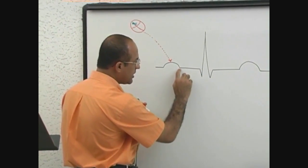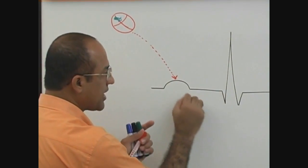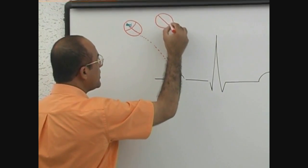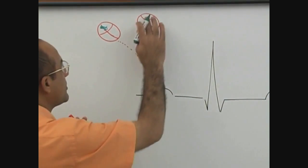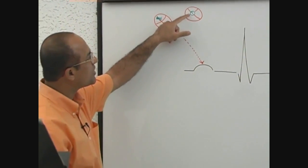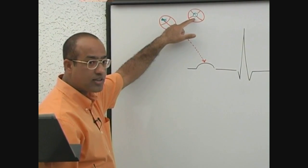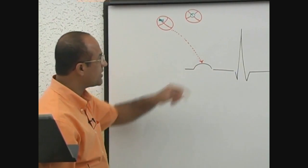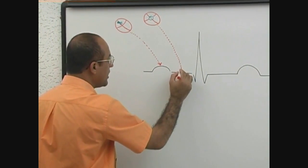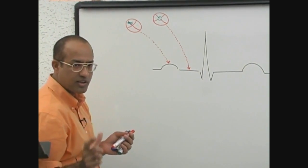Then we come to this — the ST segment, an isoelectric line, a straight line at the end of the P wave and beginning of the QRS complex. This straight line is called the PR segment, and it signifies the electrical event when current is passing through the AV node. The electrical activity is so small it is not detected by the electrodes, so the needle does not fluctuate, and as the paper passes under the neutral needle, a straight line is drawn. This straight line signifies conduction of the cardiac impulse through the AV node.